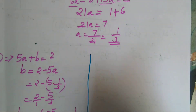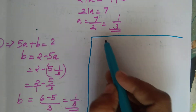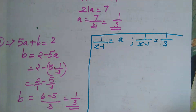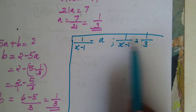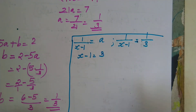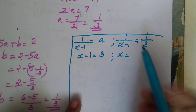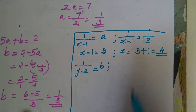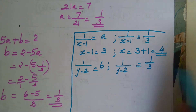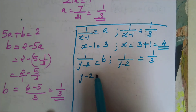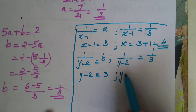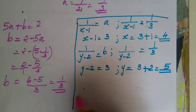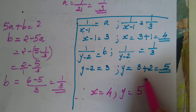Now I want to find the values of x and y. Since 1/(x-1) = a = 1/3, comparing numerators and denominators, x - 1 = 3, so x = 4. Similarly, 1/(y-2) = b = 1/3, so y - 2 = 3, giving y = 5. Therefore, x = 4 and y = 5 is the solution.